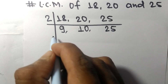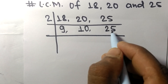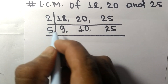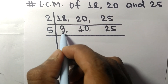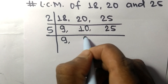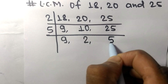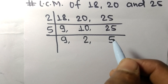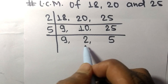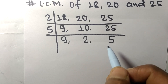Now 10 and 25 are divisible by 5, but 9 is not divisible, so it stays the same. 5 times 2 is 10, 5 times 5 is 25. The numbers remaining are now 9, 2, and 5.